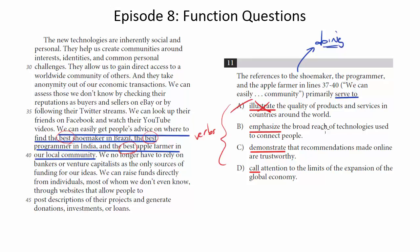How about B? Emphasize the broad reach of technologies used to connect people. Yeah, notice we have a broad reach here, right? We can learn about the best shoemaker in Brazil, we can learn about the best programmer in India, the best farmer in our local community. So it does show how you can use this technology to connect people all across the world. So this fits as well exactly not only within the cited lines, but within the paragraph as a whole. The whole point of this technology is to help create communities around common interests, identities, and common personal challenges to gain direct access to a worldwide community of others, and this can help with economic decisions as well. So in the context not only of the sentence, but also the paragraph as a whole, B makes the most sense so far. So we'll put a check next to that.